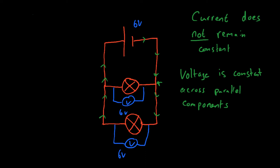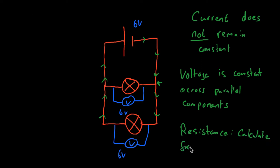Now lastly, the resistance. The resistance is more complicated, and there are a few rules you can use to work out resistance. But it's always easiest to just calculate the resistance from the other two — calculate from voltage and current. And you'll see what I mean when we go through a worked example, which we're going to do right now.